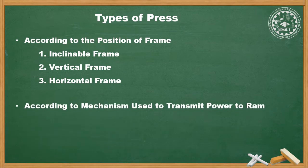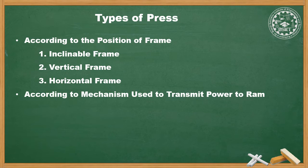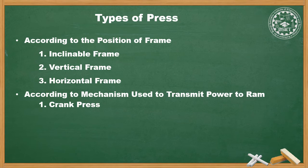Next, according to the mechanism used to transmit power to the RAM — the RAM driven mechanism. First is crank press, which consists of a crankshaft driven by a flywheel. The rotary motion of the crankshaft is converted into reciprocating motion of the RAM with the help of a connecting rod. Next is cam driven press, where with the help of a cam operated mechanism we achieve the reciprocating motion of the RAM.